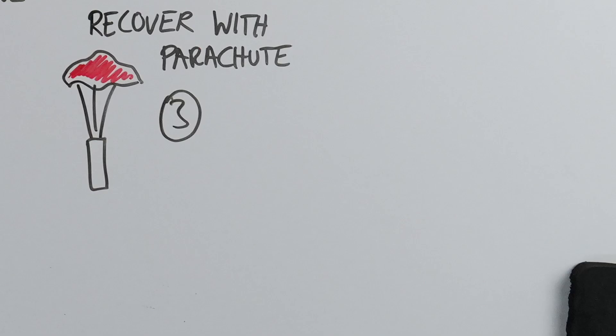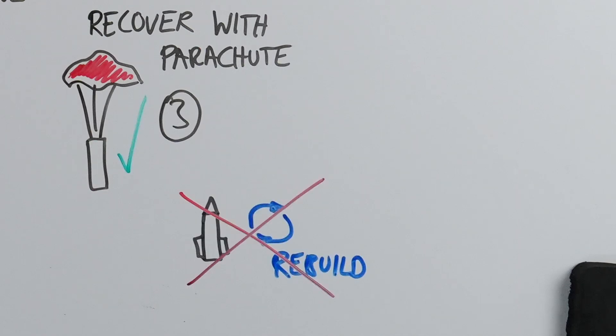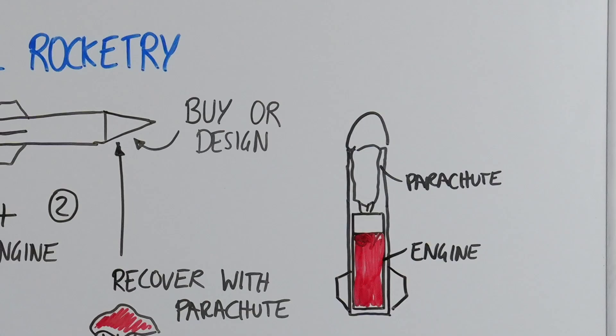As mentioned, we use parachutes to recover our model rockets so we don't have to rebuild them. There are several methods to deploy the parachute, but one of the most common techniques involves using the recoil from certain types of engines that release gas after burnout.